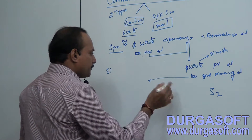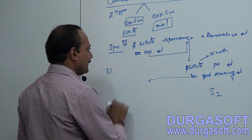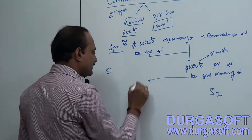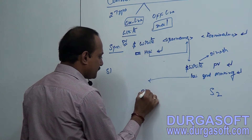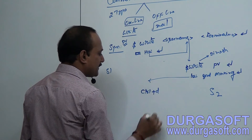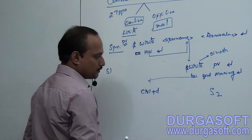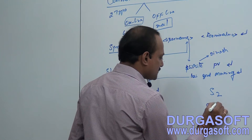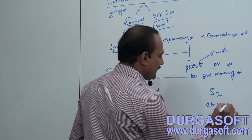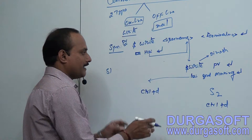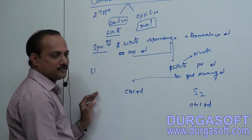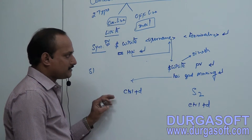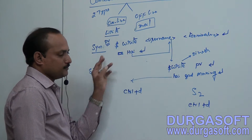Once their communication is finished, how does a user terminate the write command? At the end of the communication, each user has to press Ctrl+D individually. Then both users terminate the communication. This is called online communication.